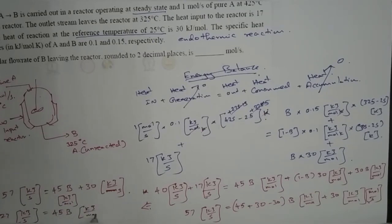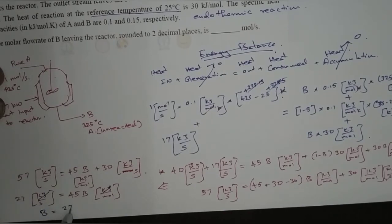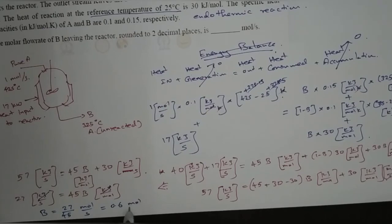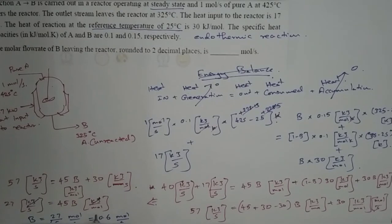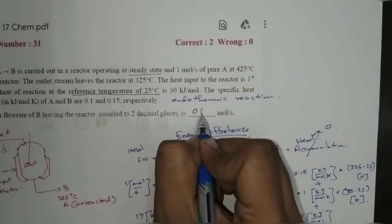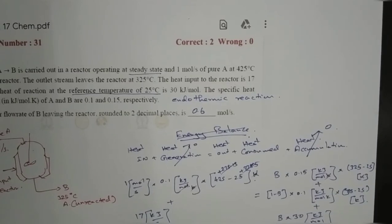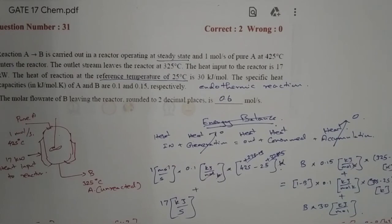So 57 minus 30 equals 27 kilojoules per second, which equals 45B. Therefore B equals 27 divided by 45, which equals 3 divided by 5, which is 0.6 moles per second. The answer to the question is 0.6 moles per second.